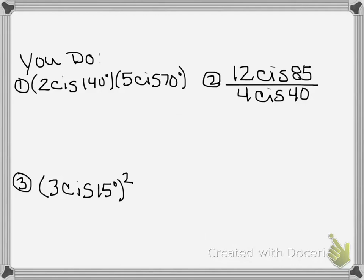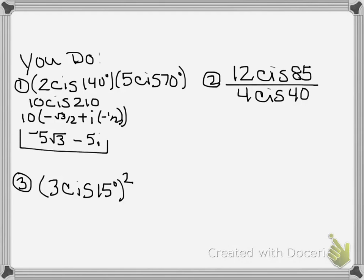And welcome back. Let's check our answers. For number one, if you said you're going to multiply 2 times 5 and get 10 and then take cis of 140 plus 70 and get 210 degrees, you were exactly correct. Then we would expand it. 10 times cosine of 210 degrees, which is negative root 3 over 2 plus i sine of 210 degrees. My pen is not cooperating. And we have i sine of 210 degrees and the sine of 210 degrees is negative 1 half. And then we distribute the 10 and you should get negative 5 root 3 minus 5i. If you got that, high five. Nice job.